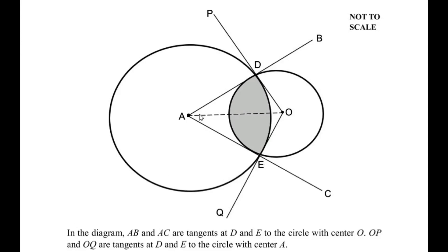In the diagram, AB and AC are tangents at points D and E to the circle with center O, and OP and OQ are the tangents at the same points D and E to the circle with center A. So there are two sets of tangents given here: AB and AC acting as tangents to the circle with center O, and OP and OQ acting as tangents to the circle with center A.